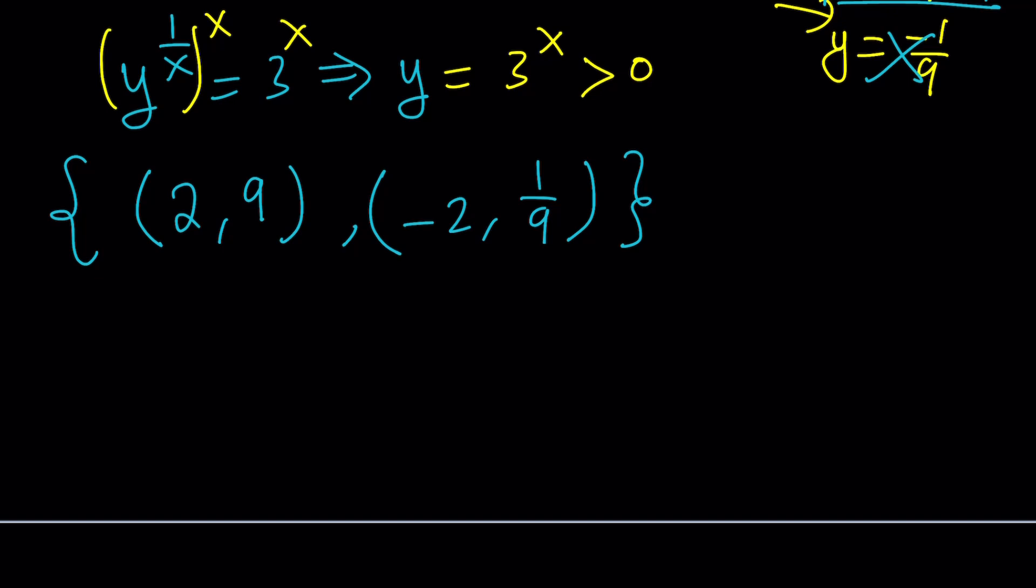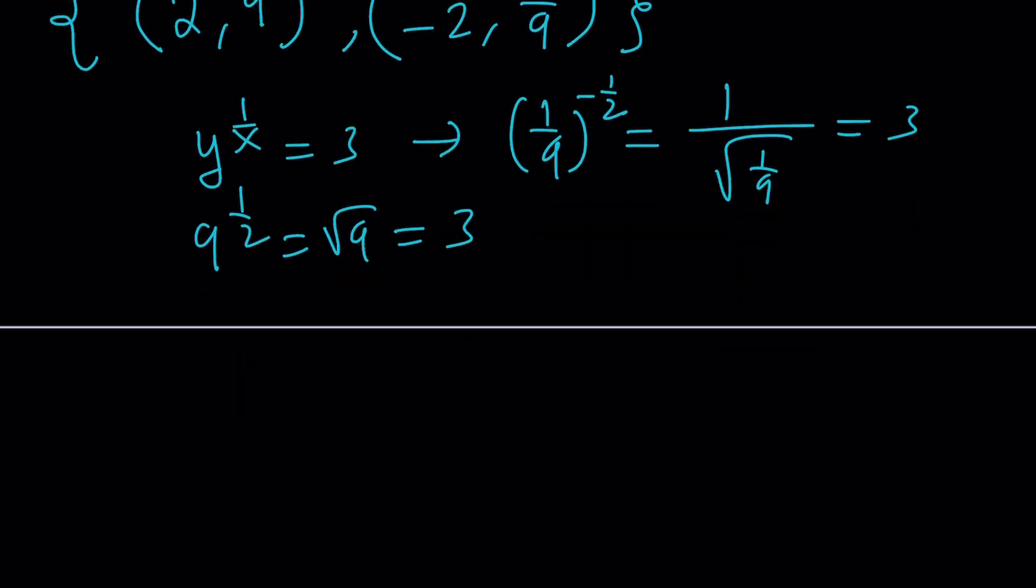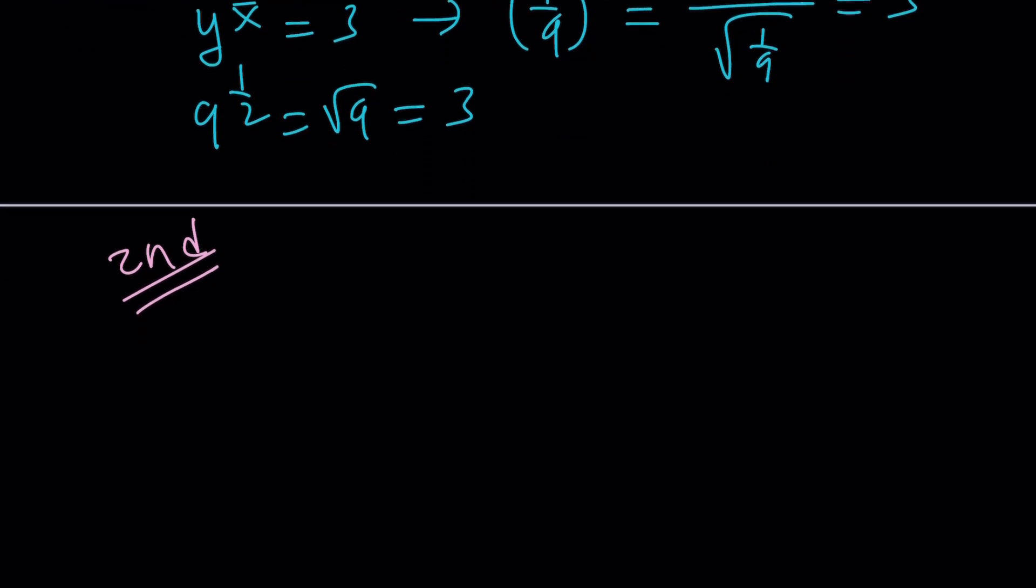Now, how do we check our work? Just by substitution, it's going to be fairly easy. For example, if you plug in 9 and 2 into this, 9 to the power of 1 half, in the real sense, this means the square root of 9, and that will be 3. And with negative 2, you're going to have 1 ninth to the power negative 1 half, which means 1 over square root of 1 ninth, and that's also going to be 3. So our solutions work.